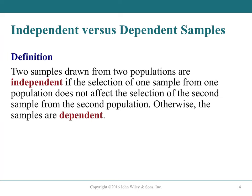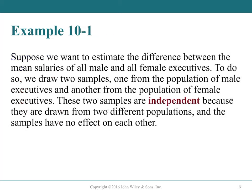When drawing two samples from two populations, they are independent if one sample selection does not affect the other. For example, drawing one sample from male executives and another from female executives gives independent samples, since they come from different populations with no effect on each other.